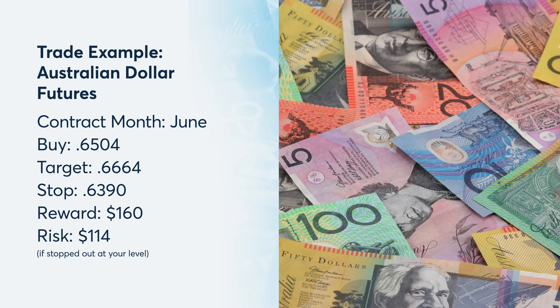Now if a trader believes that the Australian dollar could bounce, they could buy the June micro Australian dollar futures contract at 0.6504, and target a move to the March highs of 0.6664. A stop for this trade could be placed below at 0.6390. This trade could make $160 if the target is reached, and risks $114 if stopped out.